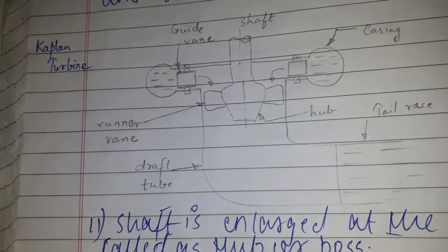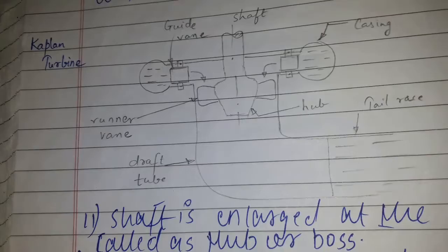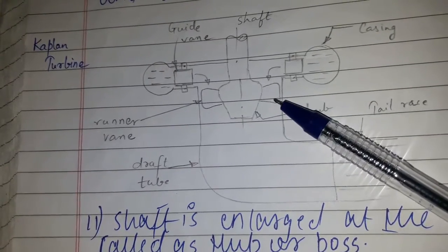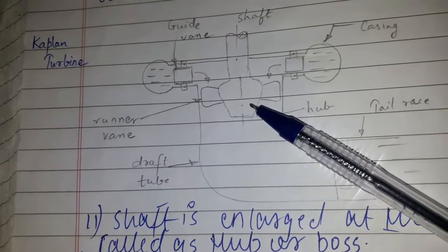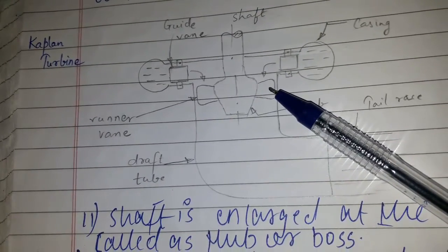The runner vanes are attached to the hub. The blades of the runner vane are adjustable. The runner has four to five plates.